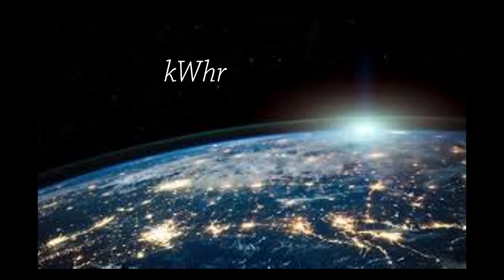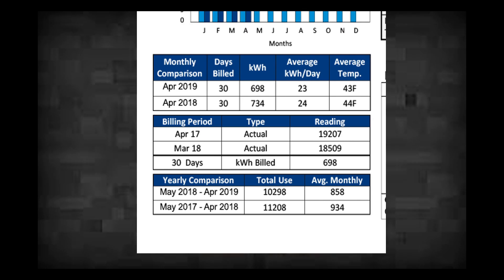A kilowatt hour is a unit of just pure energy, like a joule, while a watt is a joule per second. When you see your electric bill, you see the amount of energy used, not the rate at which you used it. So this is the value we want.